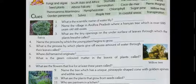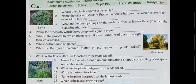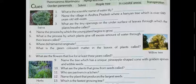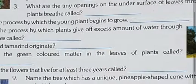I hope everybody is sitting with a pencil so you can fill in the answers with me. Question three: what are the tiny openings on the under surface of leaves through which plants breathe called? We breathe through our nostrils — exchange of gases takes place through nostrils in human beings. Plants have a small opening on the surface of the stem or beneath the surface of the leaf. The tiny opening is called stomata — S-T-O-M-A-T-A.